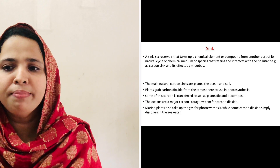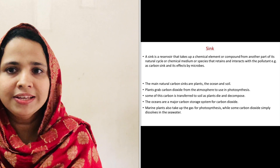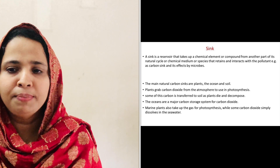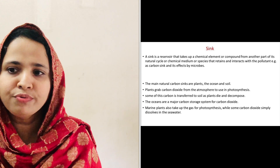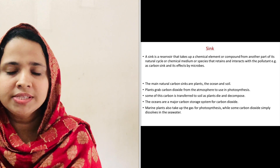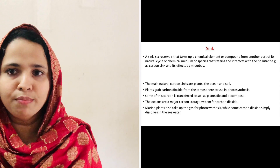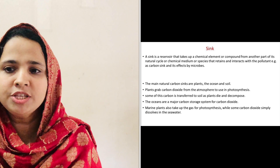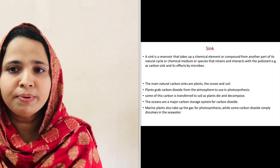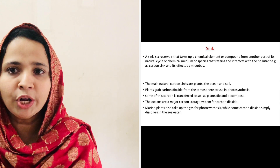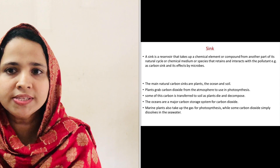For example, the main natural carbon sinks are plants, the ocean and the soil. Plants grab carbon dioxide from the atmosphere to use in photosynthesis. Some of the carbon is transferred to the soil as plants die and decompose. The oceans are a major storage system of carbon dioxide. Marine plants also take up carbon dioxide for photosynthesis, while some carbon dioxide similarly dissolves in seawater.